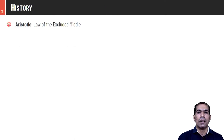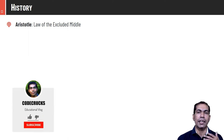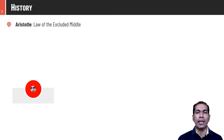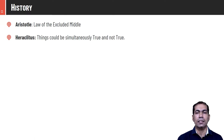Fuzzy logic brings significance rather than precision. The history of fuzzy logic: it was developed in 1965, but roots date back to Aristotle, who proposed the Law of Excluded Middle — any statement can be either true or false, with nothing in between. Later, Heraclitus said things could be simultaneously true or false.